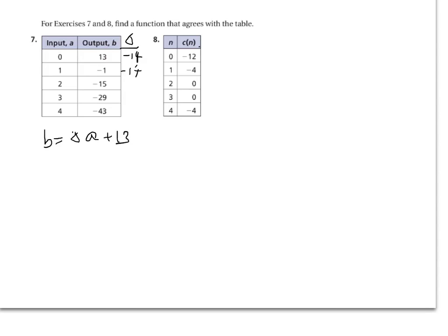The next one is trickier. Let's find delta first. It goes up by 8: from negative 12 to negative 4. Then negative 4 to 0 is up 4. Then 0 to 0 is 0. And 0 to negative 4 goes down 4.